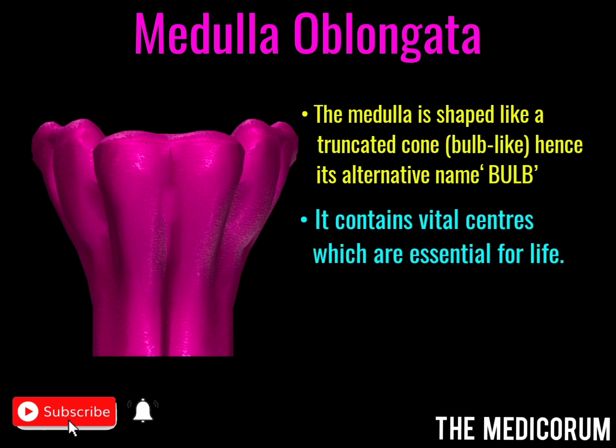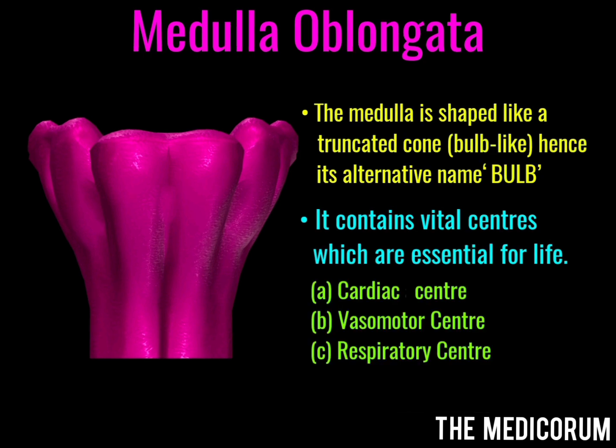The medulla also contains some of the vital centers which are essential for life. The physiological importance of medulla oblongata is due to three centers: the cardiac center, the vasomotor center, and the respiratory center.